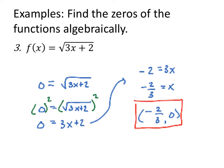Example 3. Replace f of x with 0. If 0 equals the square root of 3x plus 2, we could square both sides. When we square 0, we get 0. When we square a square root, we get the radicand, 3x plus 2. If 0 equals 3x plus 2, I could subtract 2, divide by 3, and I have my 0. Negative 2 thirds comma 0 is the point. Or we might say the 0 of the function occurs at x equals negative 2 thirds.